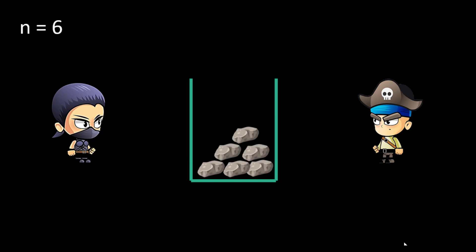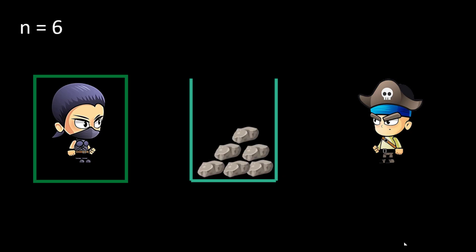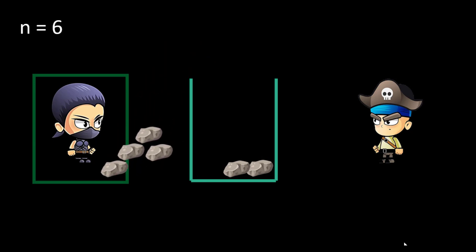Now let's see when the number of stones is 6. Alice can take out 4 stones at once, leaving behind 2 stones for Bob. From the previous example, we know that whoever goes first in a 2-stone game will lose. So as Bob is going first in the game of 2 stones, he will lose and Alice will win. This shows how we can use previously calculated values to find the next set of values.